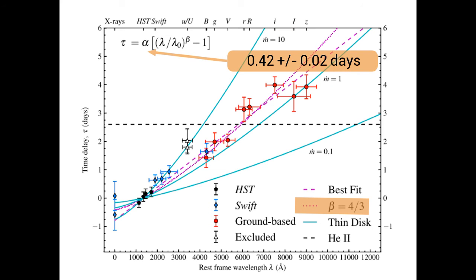An alternative interpretation is that the accretion disk is a factor of 2.6 larger than the prediction of standard thin disk theory. The larger disk size is in good agreement with other recent reverberation mapping studies, as well as quasar microlensing results.